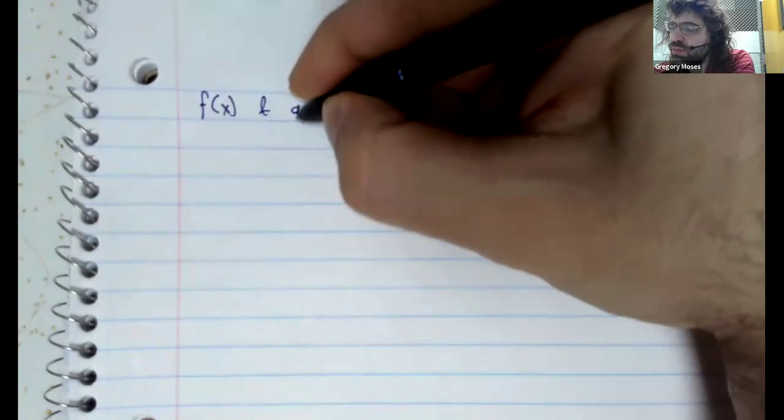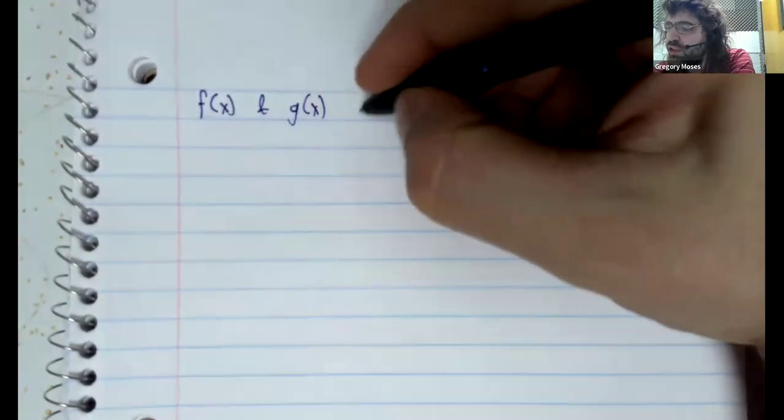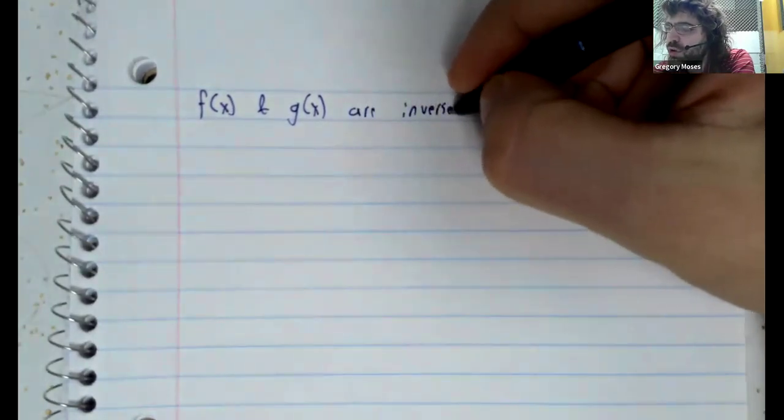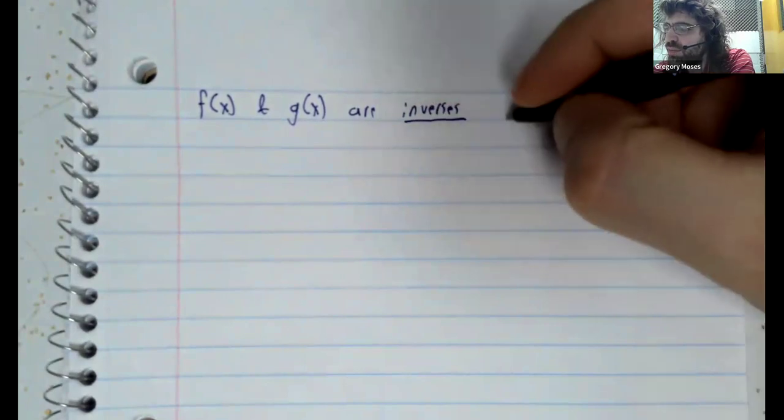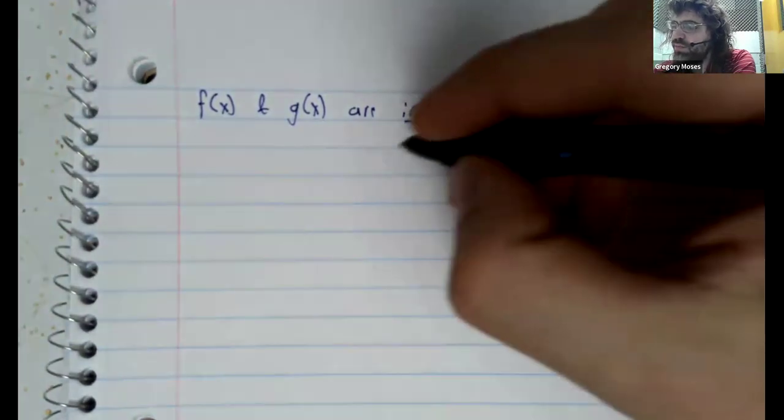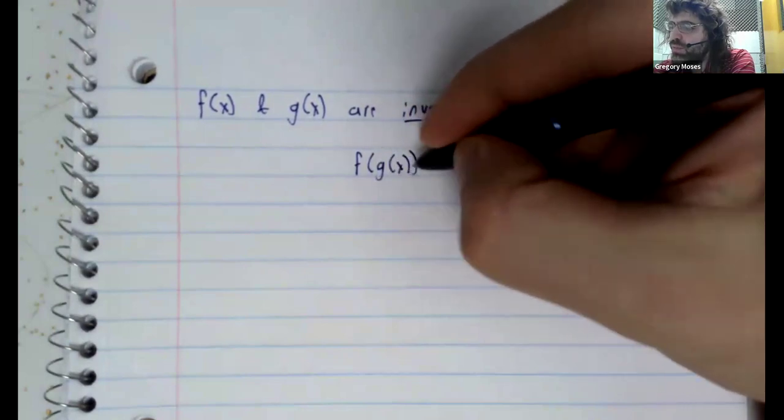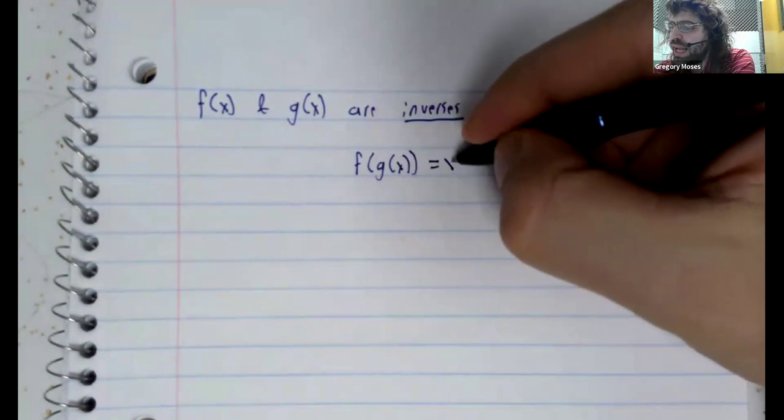So with that as our goal, we'll state the definition of an inverse. Two functions, f of x and g of x, are inverses if their compositions are x.